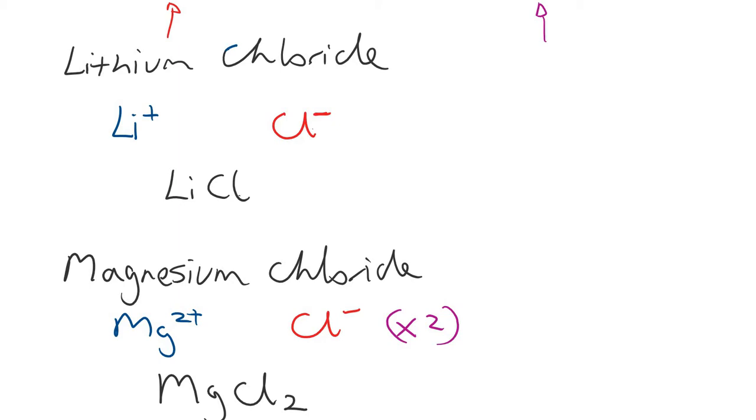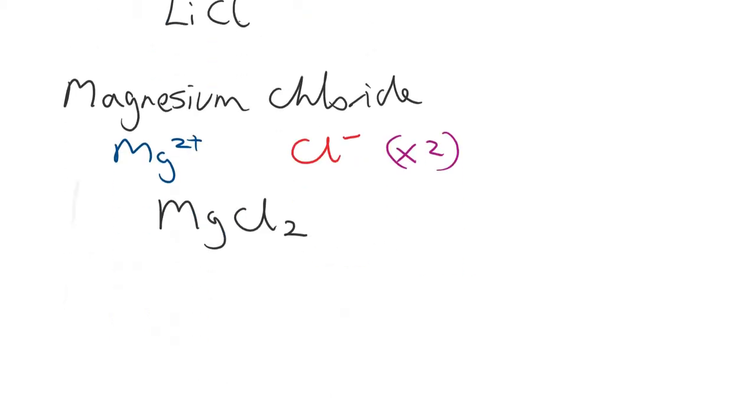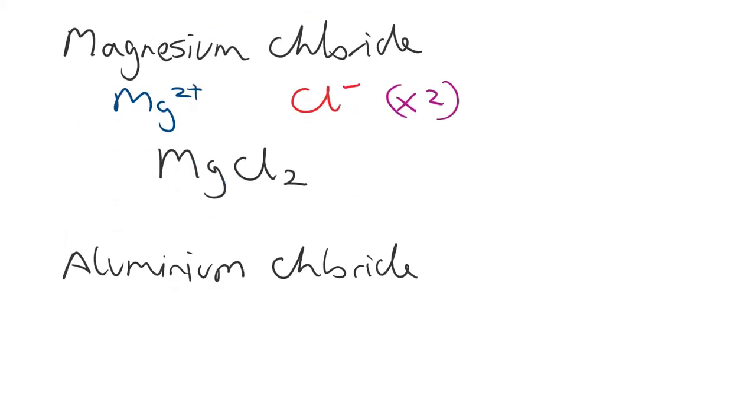If I was to look at aluminium chloride, for example, technically this is actually a covalently bonded substance, but we know that aluminium, when it bonds, forms three plus ions, or it uses three electrons. Chlorine has the one. So, in order to make the charges equal but opposite, I'm going to need to have three chlorines. So, the formula for aluminium chloride is AlCl3.